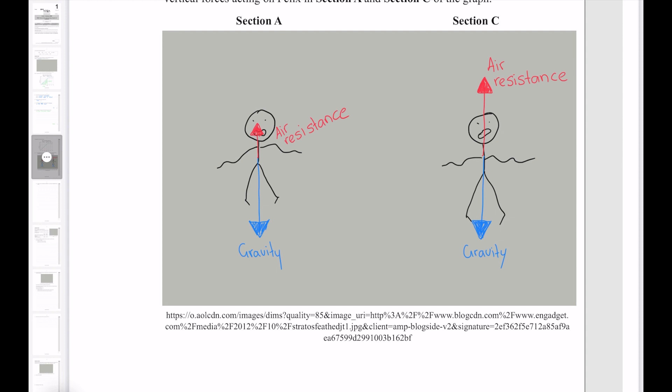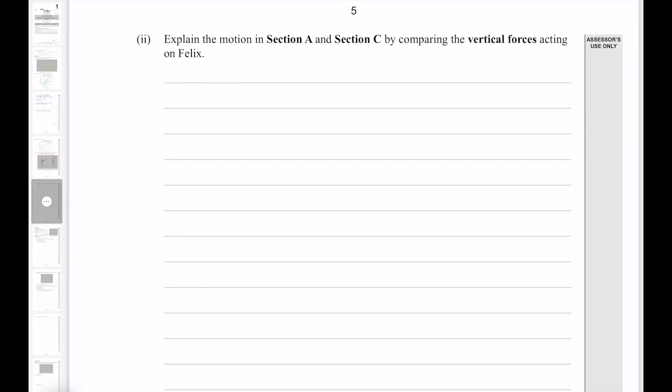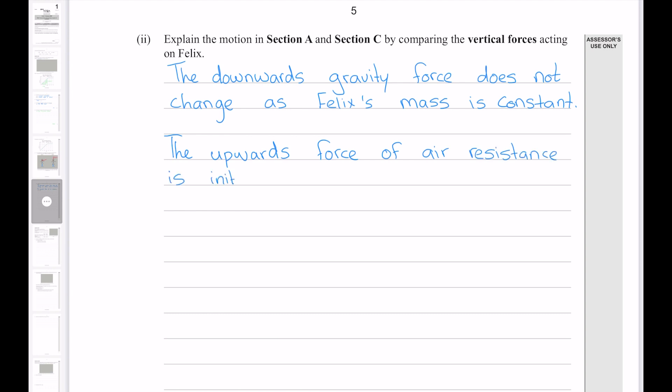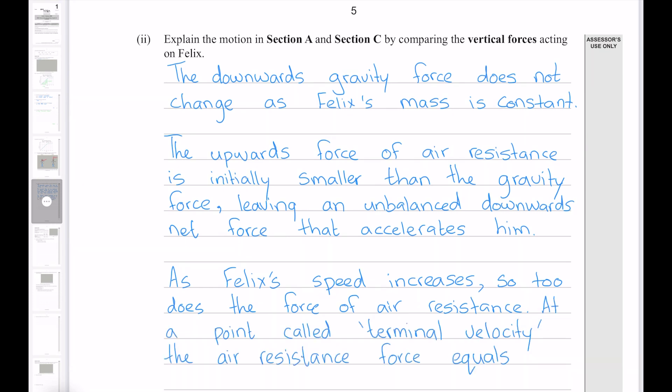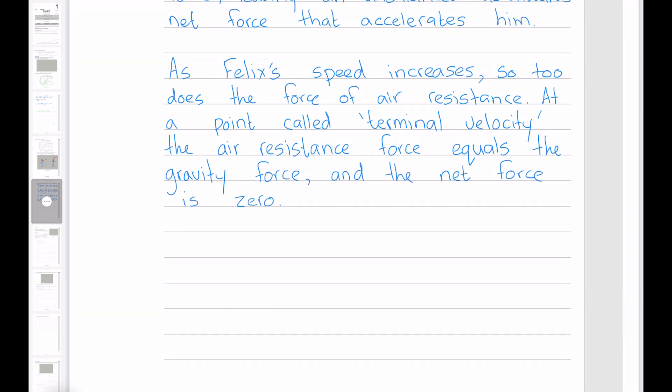Felix will travel at a constant velocity, as we see on the graph. The downwards gravity force does not change as Felix's mass is constant. The upwards force of air resistance is initially smaller than the gravity force, leaving an unbalanced downwards net force that accelerates him. As Felix's speed increases, so too does the force of air resistance. At a point called terminal velocity, the air resistance force equals the gravity force and the net force is zero. This means Felix does not accelerate, and instead travels at a constant speed.